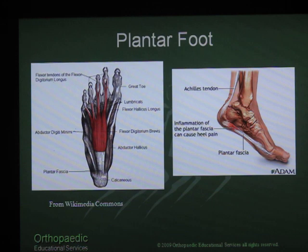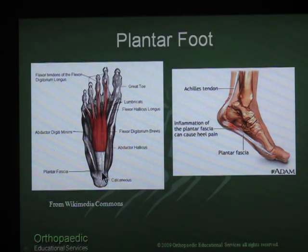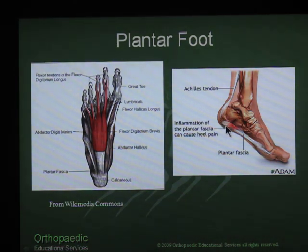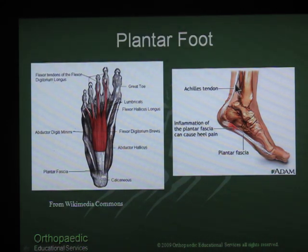Briefly to review the anatomy, the origin is here in the calcaneal tuberosity. It is a thick fibrous band of tissue that goes out and inserts into primarily the lateral four toes. You can see the Achilles tendon comes down and attaches into the posterior aspect of the calcaneus, and the plantar fascia originates from the plantar aspect of the calcaneus and goes out into the toes. Having a tight heel cord or tight Achilles can contribute significantly to the development of plantar fasciitis.